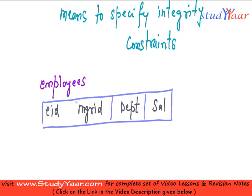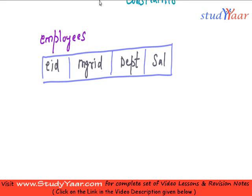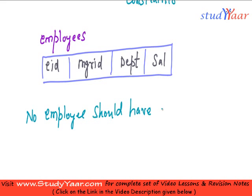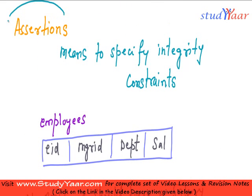I am assuming that I have a constraint on my database which is: no employee should have a salary greater than his manager. We want to ensure that this is always true — no employee having a salary greater than his manager.